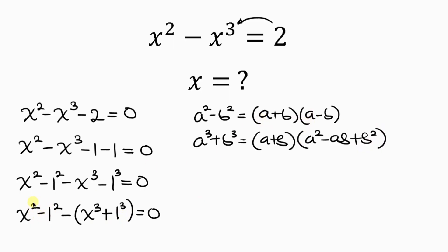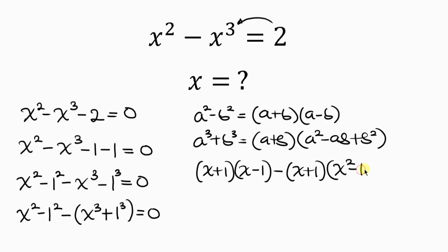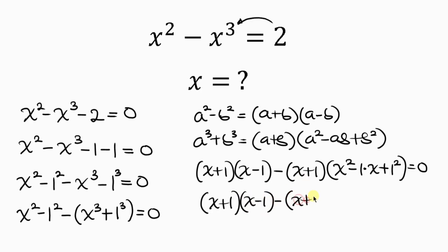Now let's write these in their factored forms. For the difference of two squares, x squared minus 1 squared becomes (x plus 1)(x minus 1). Minus, for the sum of two cubes, x cubed plus 1 cubed becomes (x plus 1)(x squared minus x plus 1). This is equal to 0. Notice that x plus 1 is common.